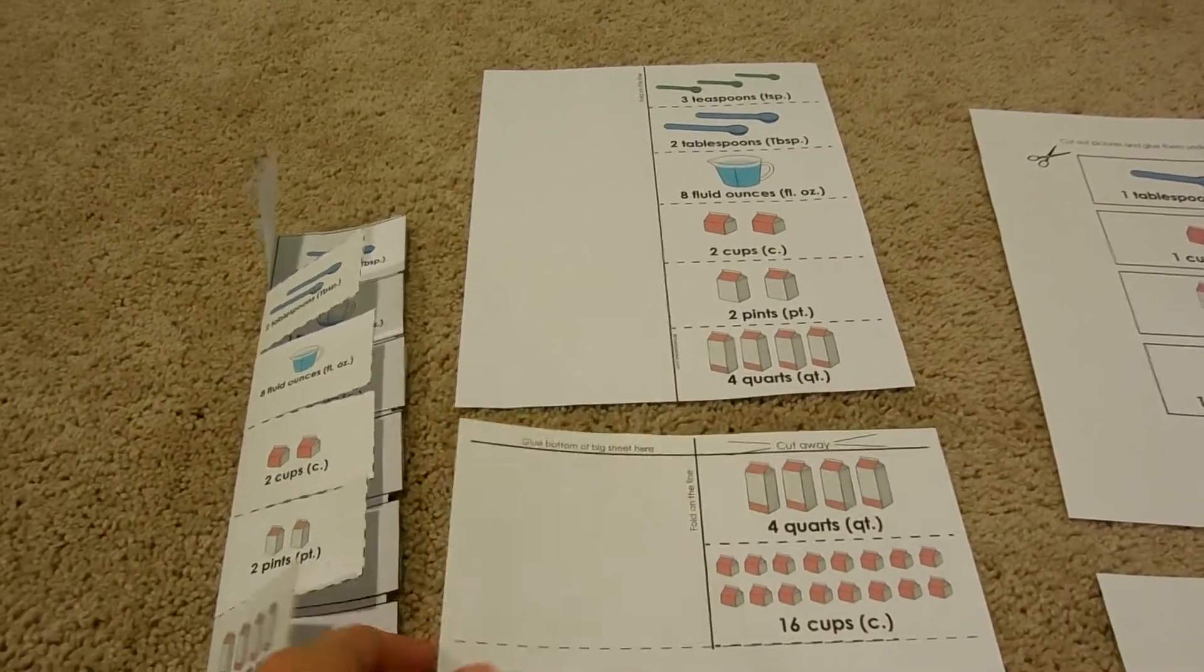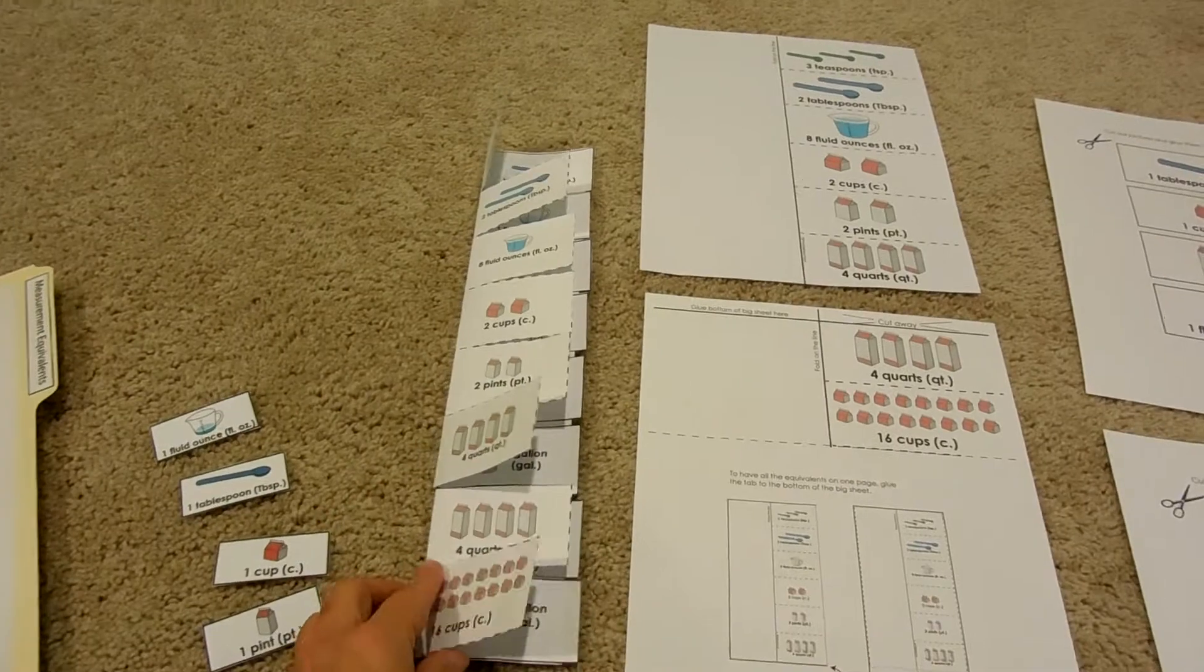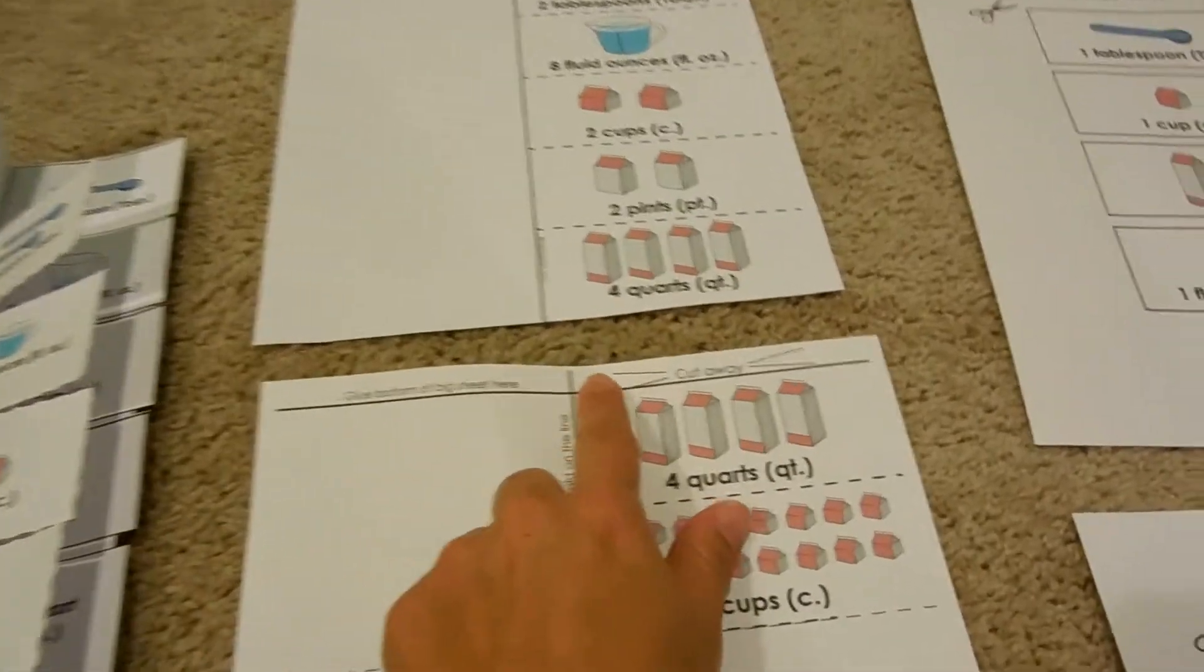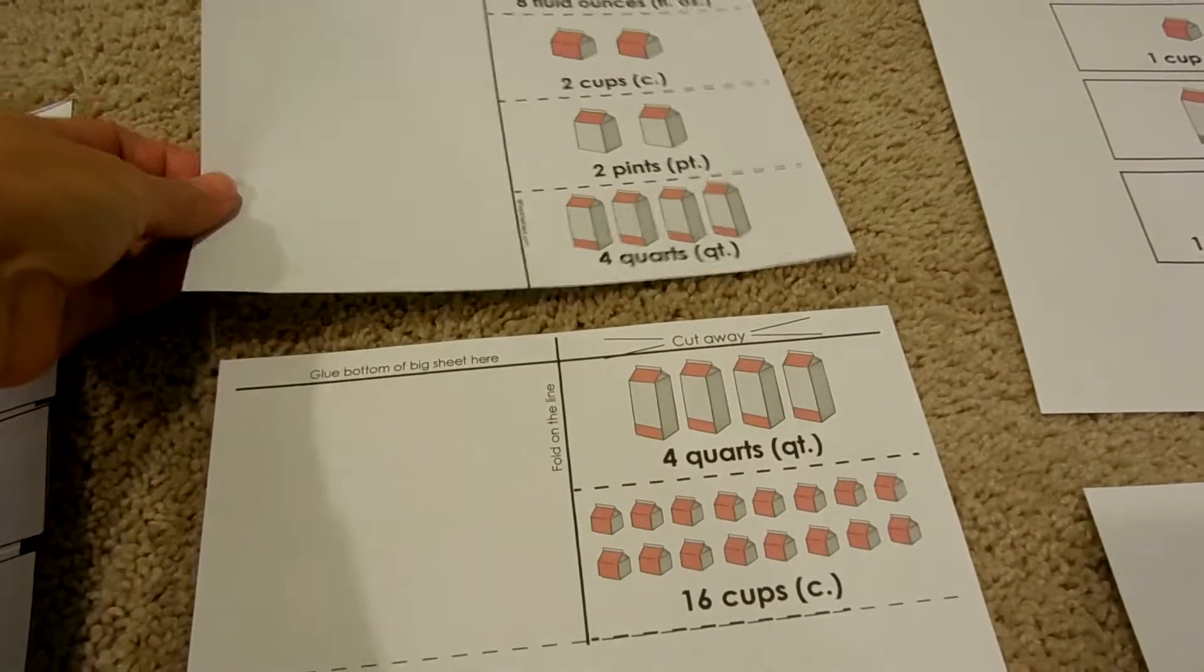So what I wanted you to know is that in order to have it all in one long sheet like this with all the conversions, what you need to do is you're going to cut this little piece off and then it tells you here 'glue bottom of the big sheet here'.